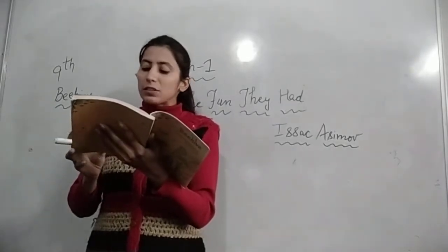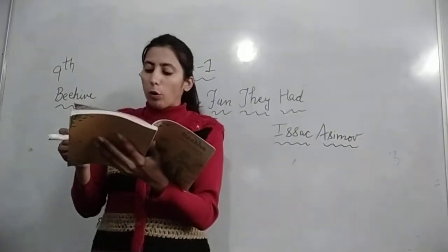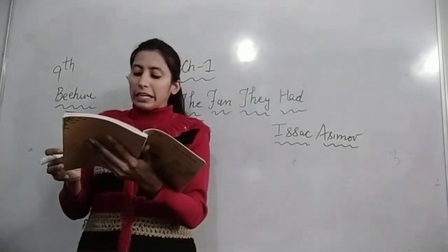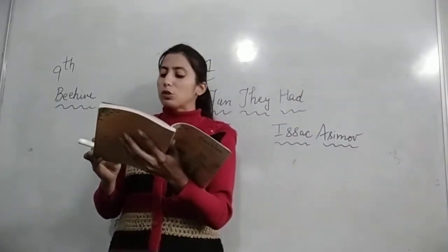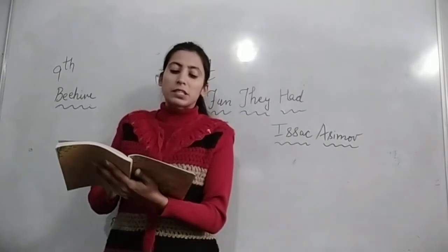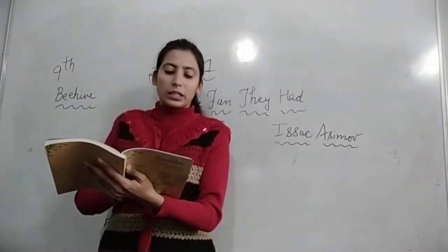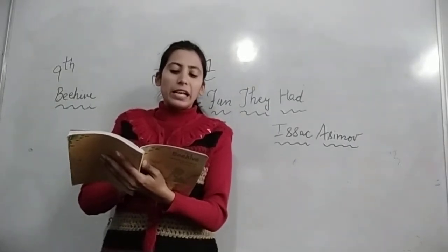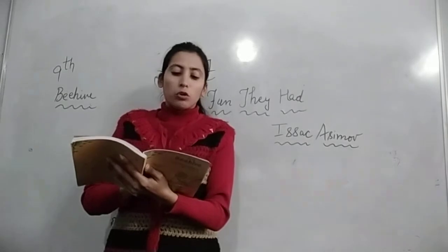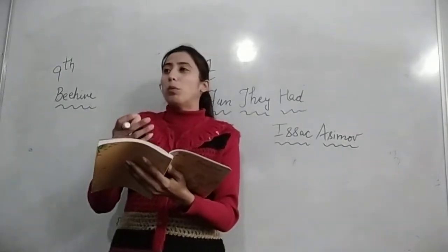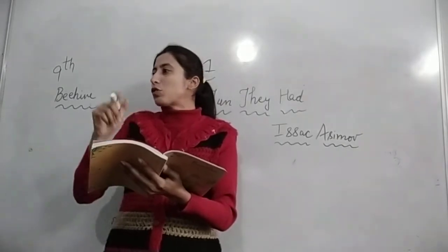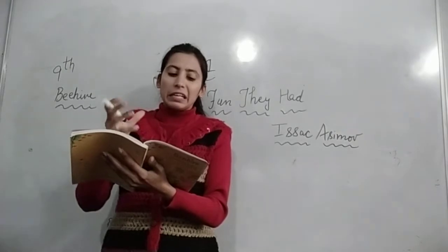Margie's grandfather once said that when he was a little boy, his grandfather told him that there was a time when all stories were printed on paper. Margie बता रहे हैं कि उनके grandfather ने उन्हें बताया था, जब वो छोटे बच्चे थे, उनके grandfather के grandfather ने बताया था कि एक time था जब सारी stories paper के उपर print हुआ करती थीं. They turned the pages which were yellow and crinkly — वो बहुत ही पीला पड़ा हुआ था, बहुत पुराना page था, और crinkly — जैसे page को मोड़ देते हैं — वो crinkly मुड़ा-टूटा हो रखा था.